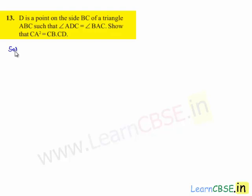Now moving on to the solution, let us consider triangle ABC in which D is a point on BC such that angle ADC is equal to angle BAC.